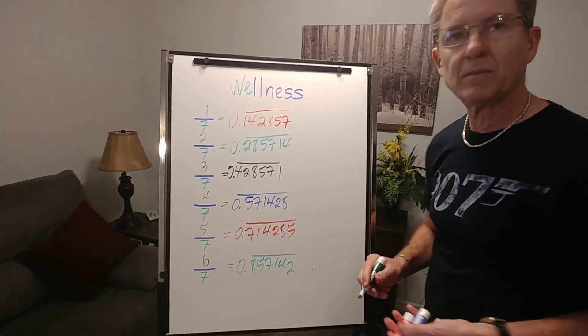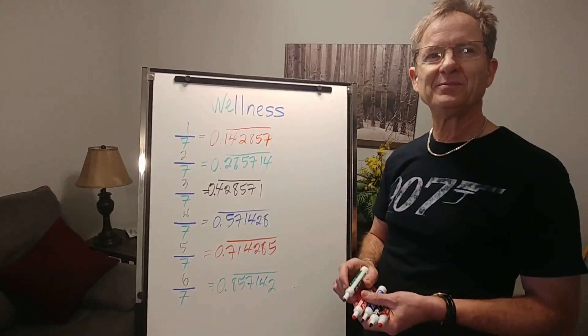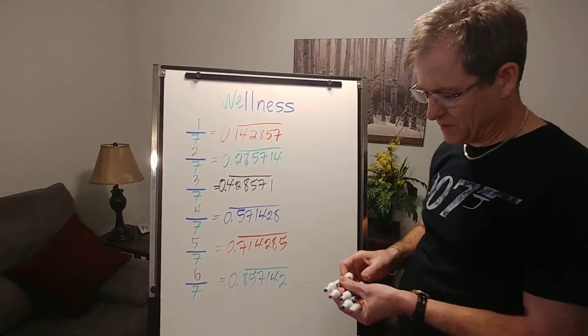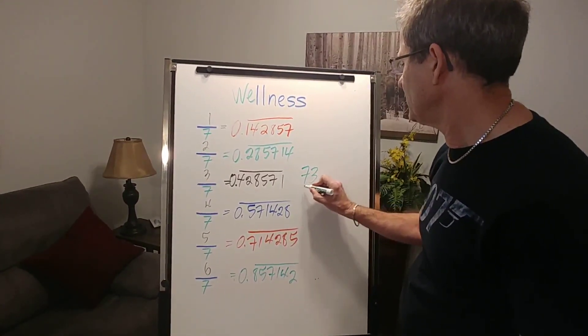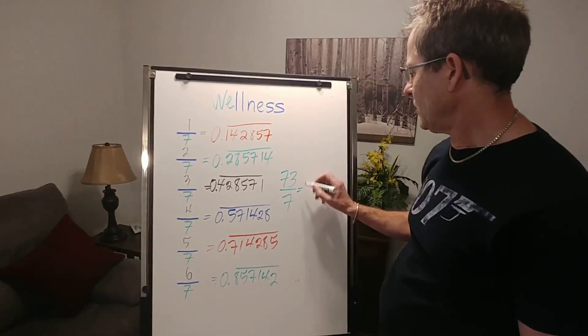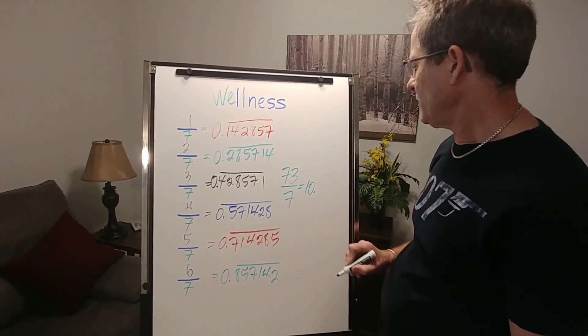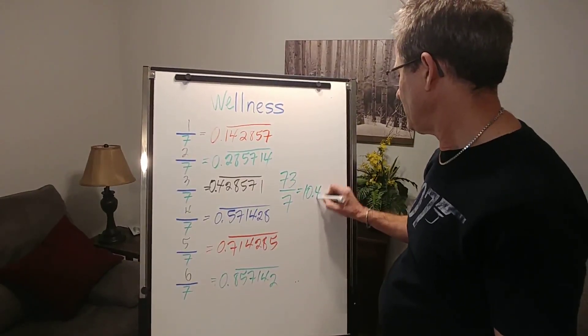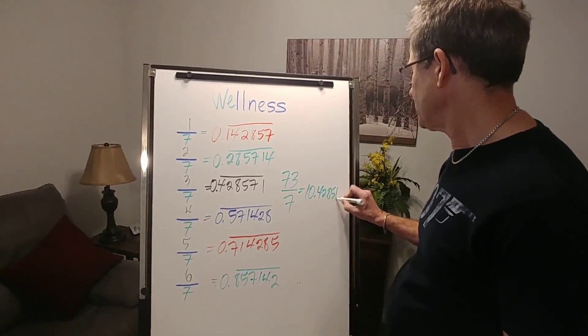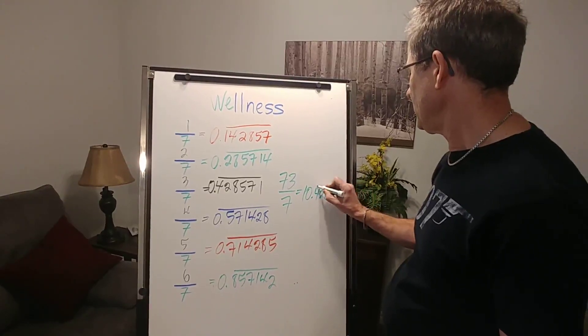So if you pick a number, any number such as 73, we can easily calculate what 73 divided by 7 is. It goes in 10 times with a remainder of 3, so we just have to tack on 4, 2, 8, 5, 7, 1, repeating.